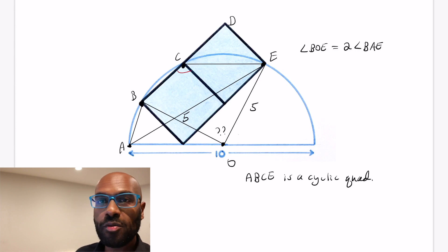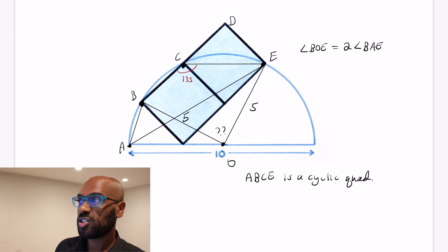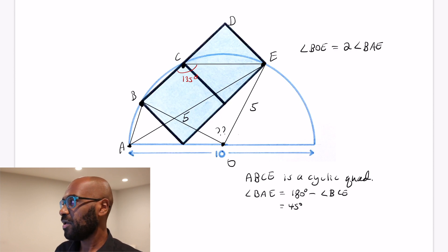Now, we actually know the measure of angle BCE, because it's composed of a right angle together with a 45 degree angle. So it's 135 degrees. And so the angle BAE itself is 180 degrees minus that 135 degrees forming the angle BCE, which then gives us that is 45 degrees.